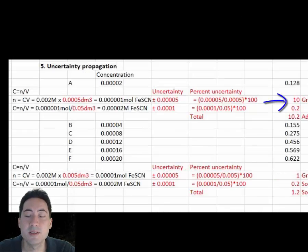Initially for standard A, 5 cm³ was measured, so divide the uncertainty by this and you have a 10% uncertainty. The final volume of 50 cm³ is made up by adding two more volumes so the uncertainty is double.